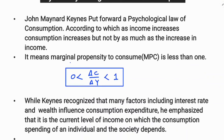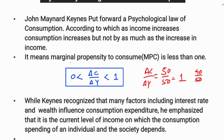That is, if income increases by 50 and consumption also increases by 50, the marginal propensity to consume will be one. But if consumption increases by less — say 40 by 50, or 30 by 50 — when income increases by that amount, then the marginal propensity to consume will be less than one.